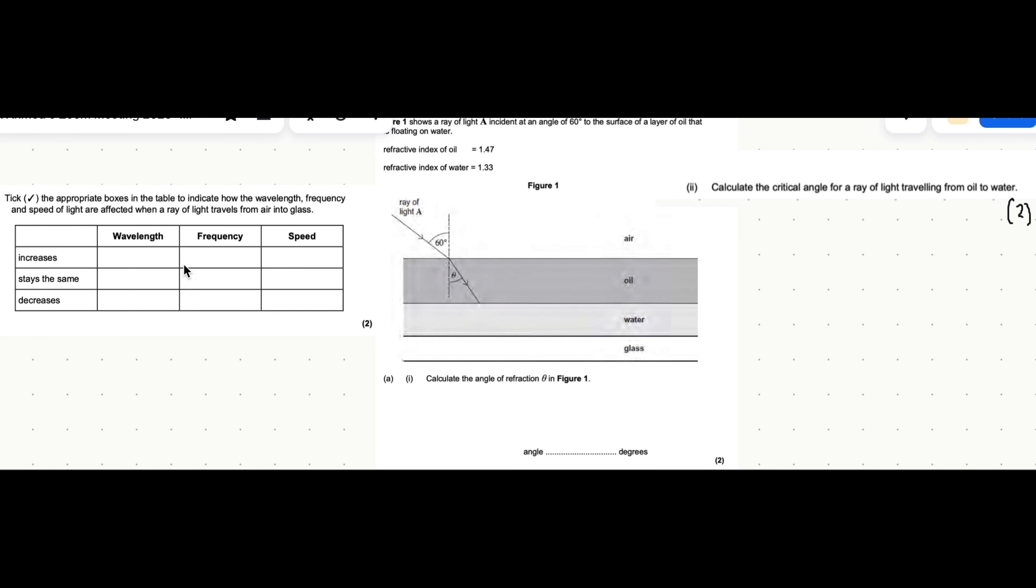In this three-part question, we're going to have a look at changes in wavelength, frequency, and speed. We're also going to have a look at using Snell's law of refraction and using the critical angle formula. So just to start with, in refraction, frequency is always unchanged. So we say it always stays the same.